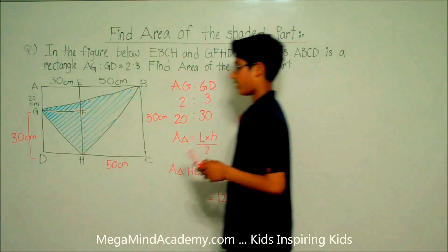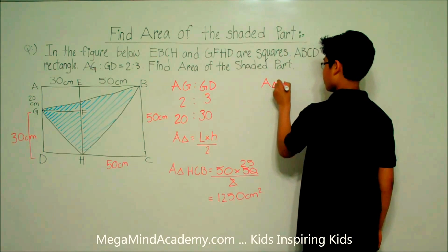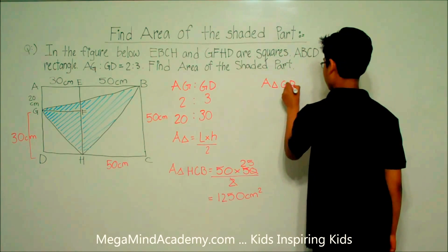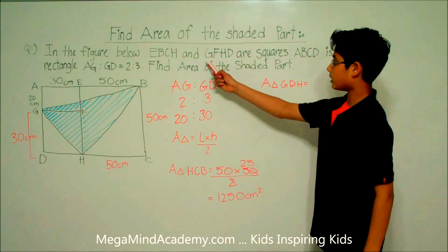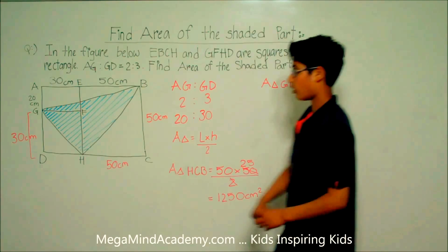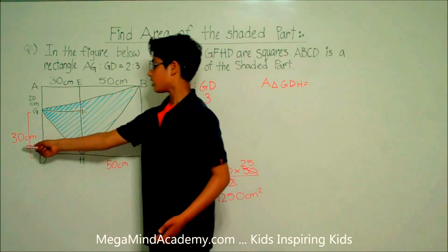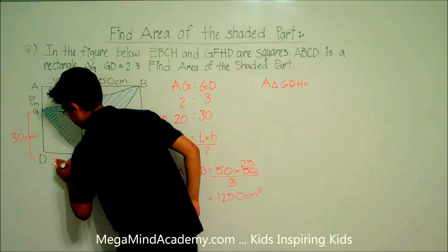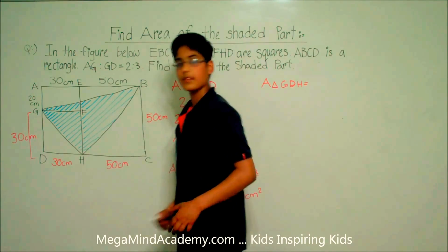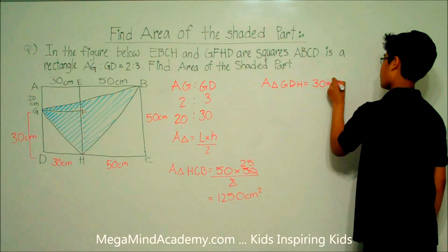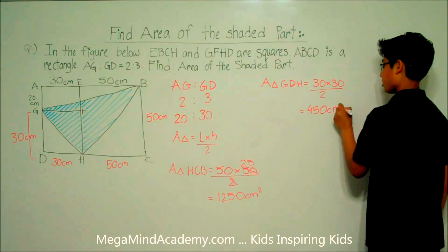Now let's find the area of triangle GDH. It states in the problem that GFHD is a square. So figure GFHD is a square of side 30 centimeters. This means that the area of triangle GDH is equal to 30 times 30 divided by 2, which equals 450 centimeters squared.